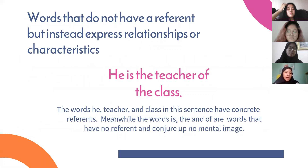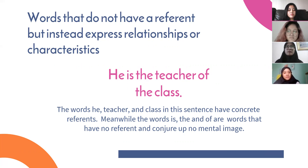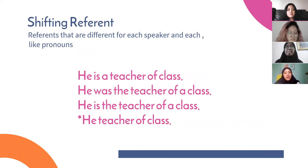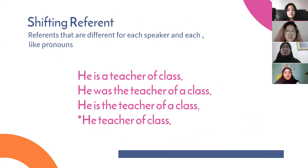The second type is words that do not have a referent but instead express relationships or characteristics. The example is 'he is the teacher of the class.' The words he, teacher, and class in this sentence have concrete referents. Meanwhile, the words is, the, and of are words that have no referent and conjure up no mental image. The last is shifting reference — references that are different for each speaker and each context, like pronouns.